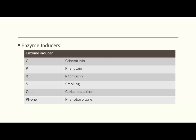Enzyme inducers can be remembered with the mnemonic 'GPRS cell phone': G = Griseofulvin, P = Phenytoin, R = Rifampicin, S = Smoking, C = Carbamazepine, and 'phone' = Phenobarbitone. These drugs induce enzymes and increase the metabolism of co-administered substrate drugs.